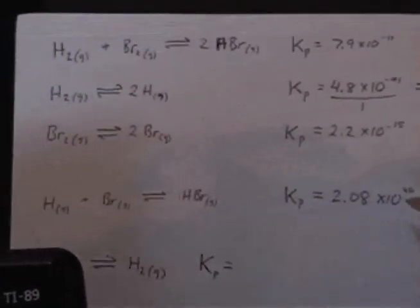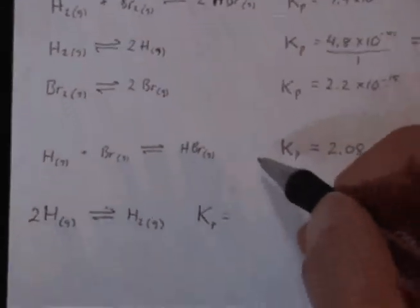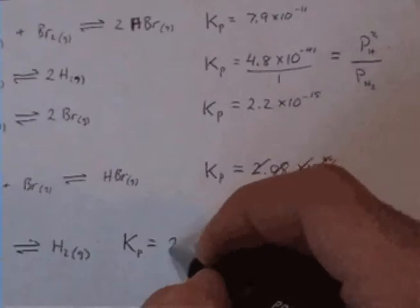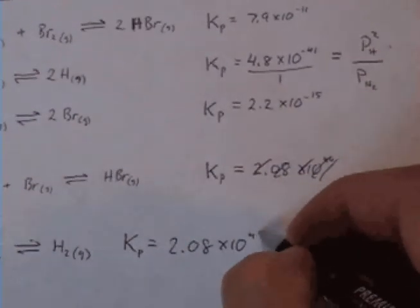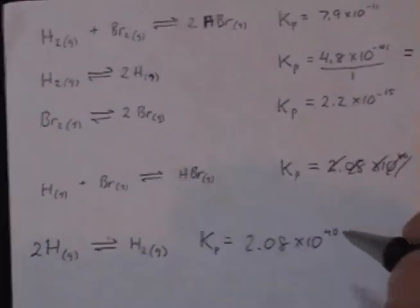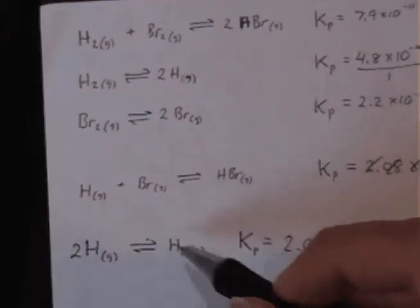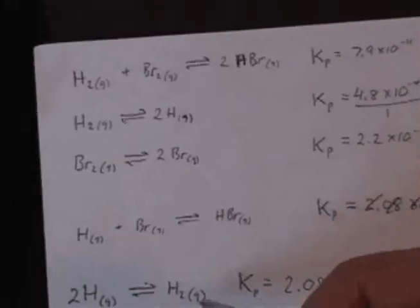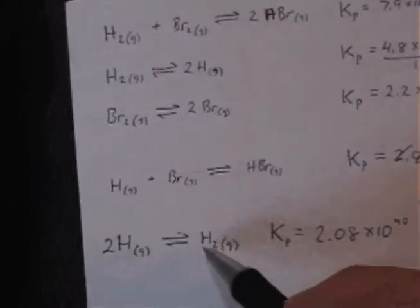Okay, so that's my Kp. Oops, I wrote that in the wrong place. Okay, 2.08 times 10 to the 40th. Alright, that's my Kp for this reaction, the combination of two atoms of hydrogen to form a molecule of hydrogen.